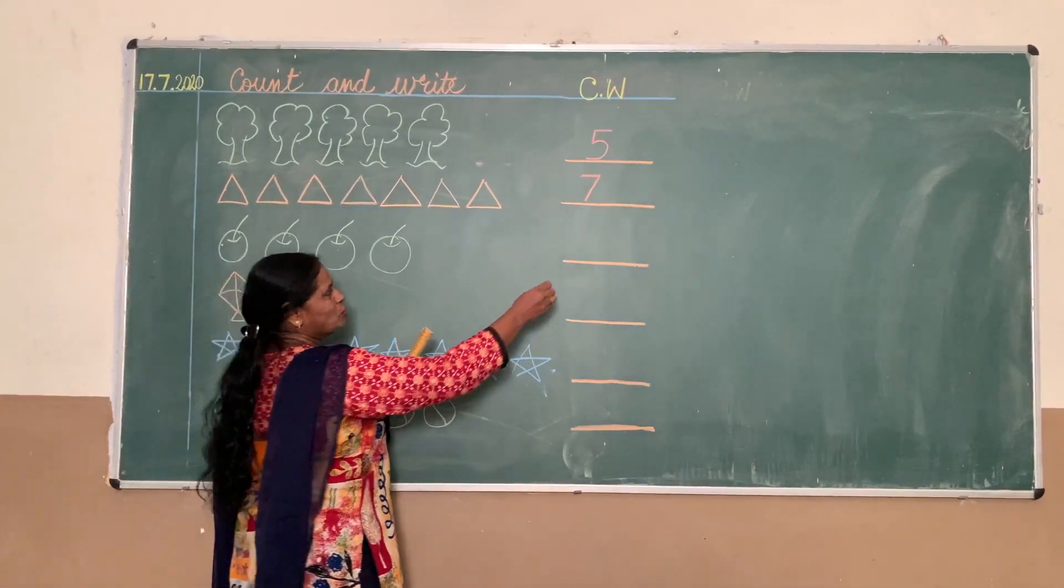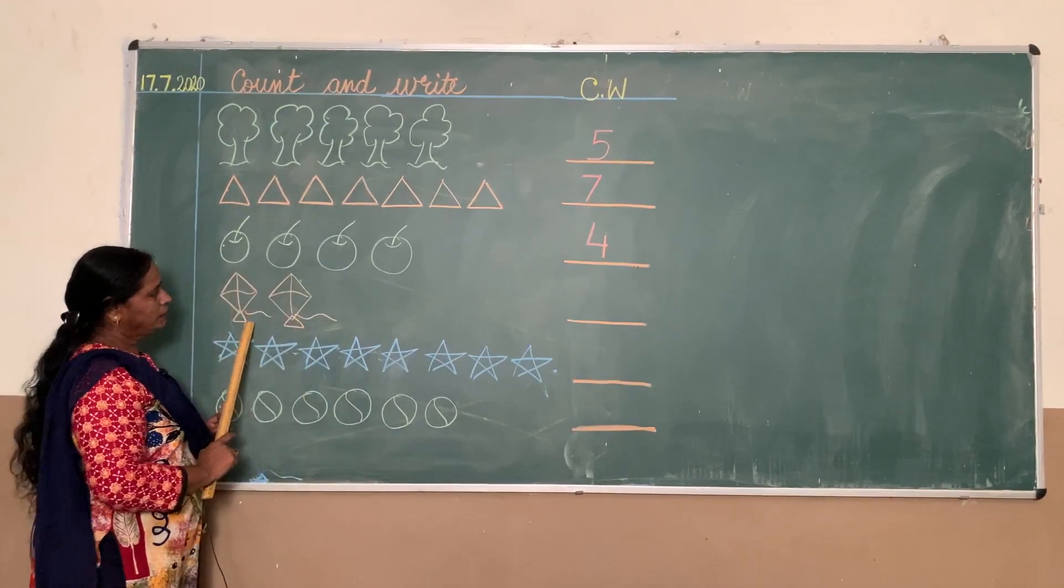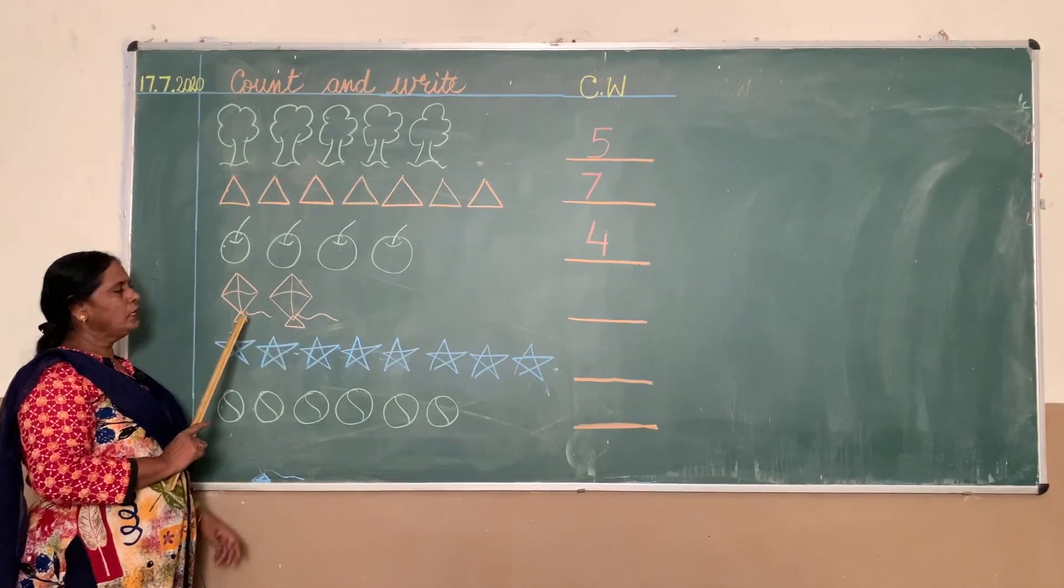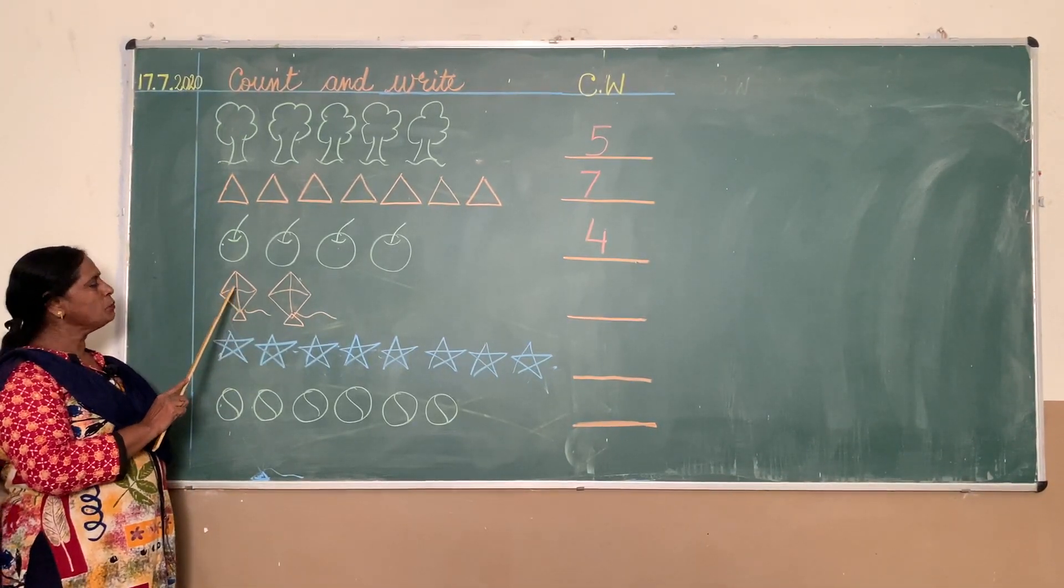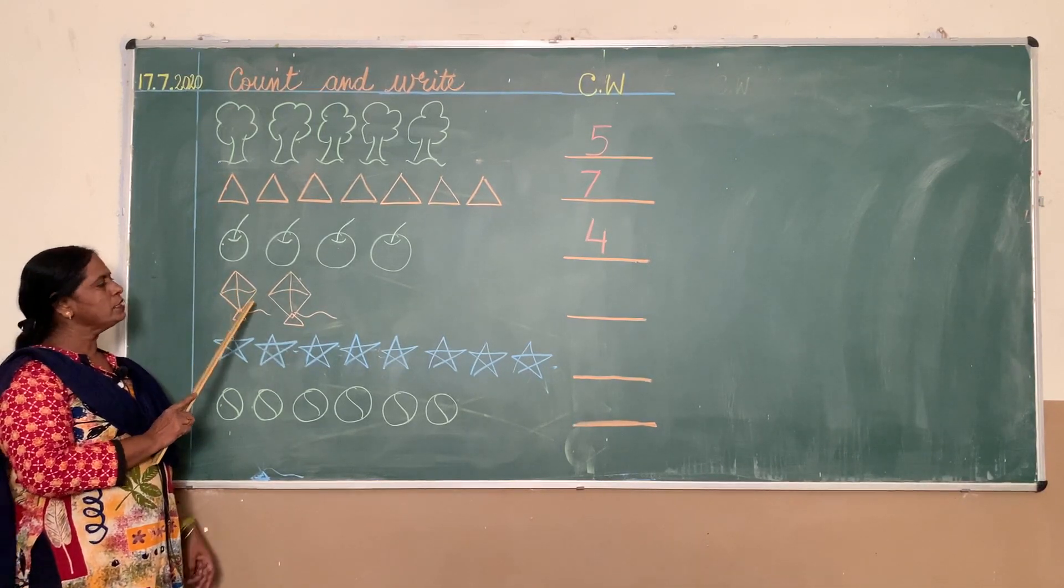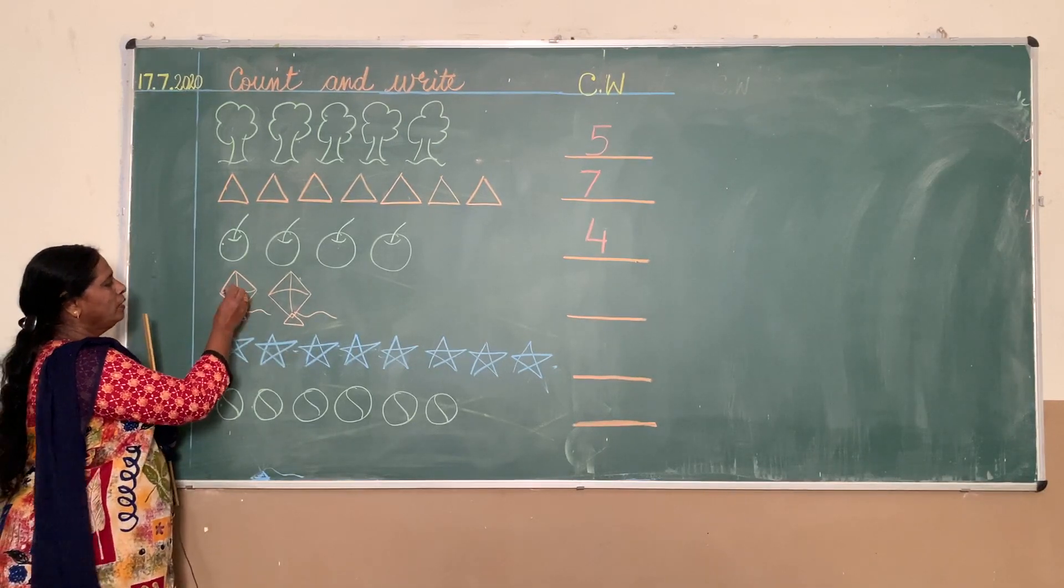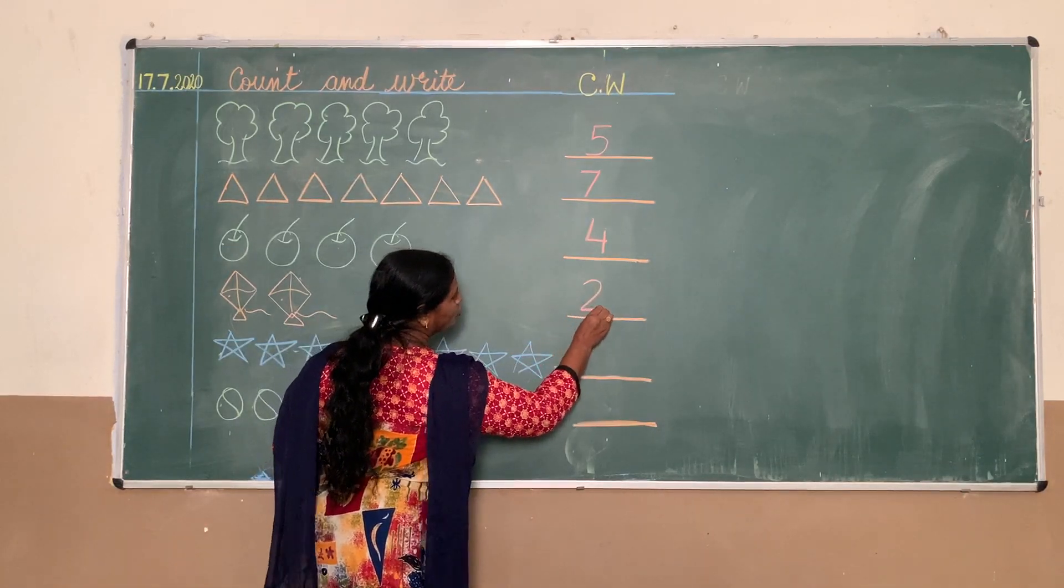Now see, how many kites are there? Count the kites. Whenever you do the counting, children, put your pencil or just put one small dot on whatever object you are counting, because then you won't make a mistake. Like one, two. So how many kites? Two kites, so you write two.